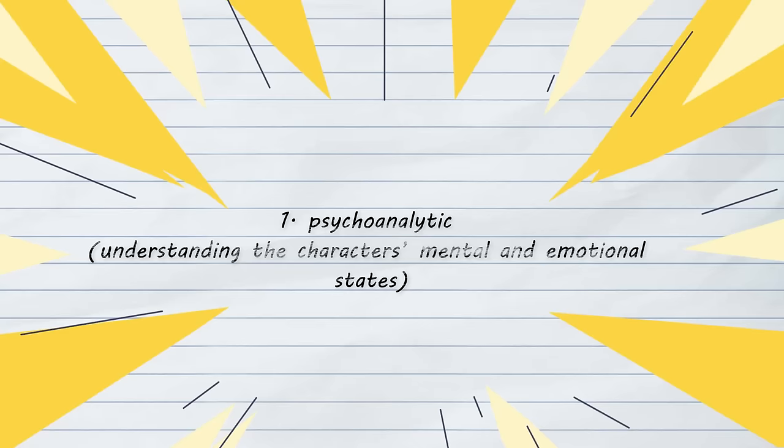Four very common lenses are: psychoanalytic, which focuses on understanding the character's emotional and mental states; feminist, which examines the story through the lens of women's experiences; Marxist, which pays close attention to the socioeconomic issues within the text by thinking of it as a product of the society from which it came; and queer, which considers queer identities and the queering of characters, actions and speech.